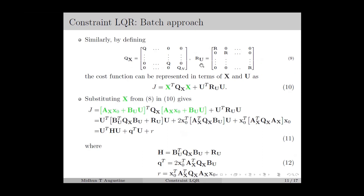Similarly, by defining Qx and Ru as in equation number 9, we can represent the cost function in terms of x and u as in equation number 10. Replacing x with Ax*x0 + Bu*u, we can rewrite the cost function J as in equation number 11, giving J in terms of the control input sequence u and the initial state x0. We can represent J as a quadratic function of u: J = u^T H u + q^T u + r, where H, q, and r are given in equation number 12.